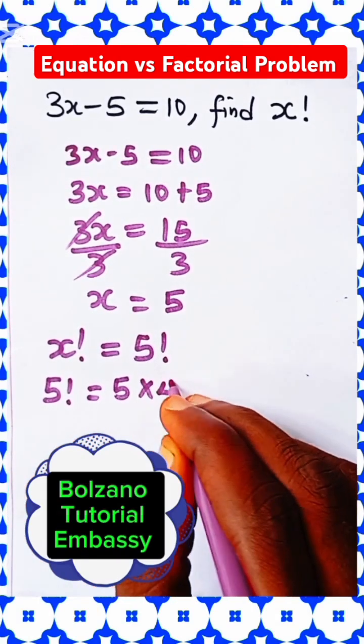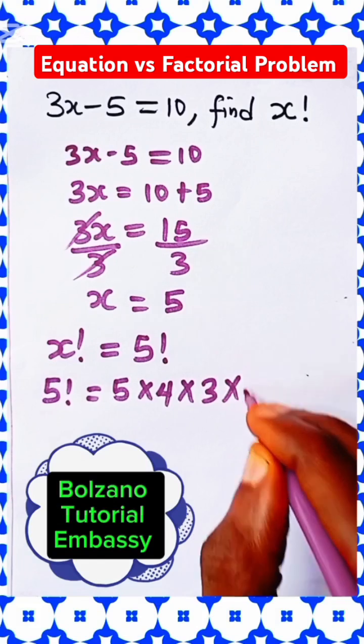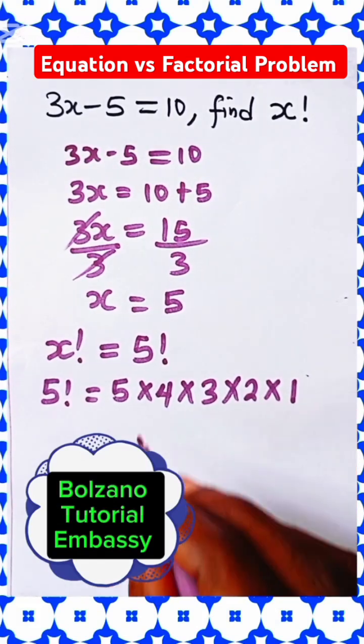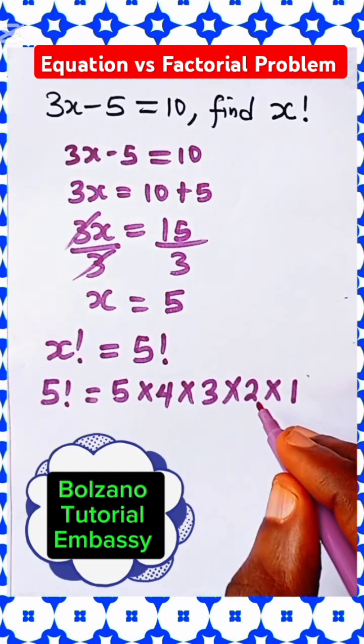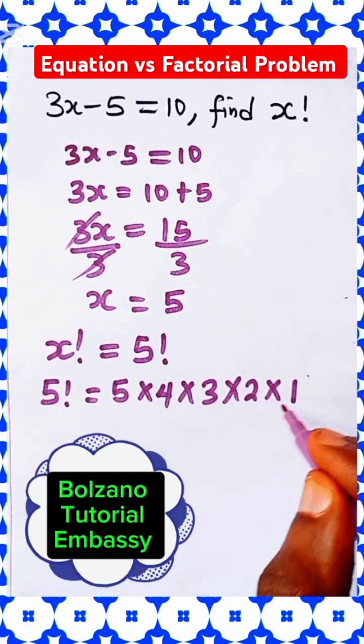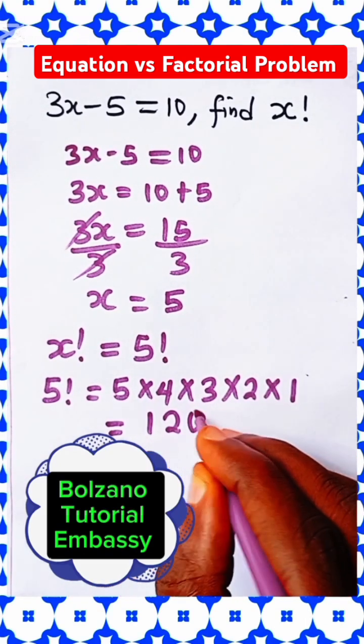5 factorial is 5 times 4 times 3 times 2 times 1. 5 times 4 is 20, 20 times 3 is 60, 60 times 2 is 120 times 1, which is equal to 120.